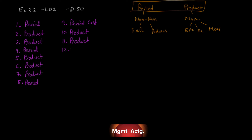Number twelve: wages of the receptionist in the administrative offices — not a manufacturing cost, so it's a period cost. Number thirteen: cost of leasing the corporate jet used by company executives — they make military transceivers and have a corporate jet! That's not a manufacturing cost, so it's a period cost. Number fourteen: cost of renting rooms at a British Columbia resort for the annual sales conference — that has nothing to do with making the product and everything to do with selling it, so it's a period cost.